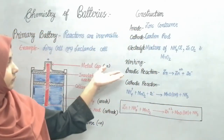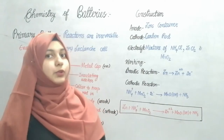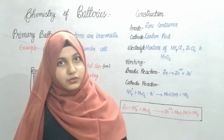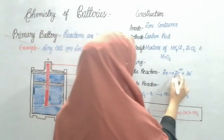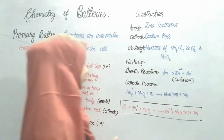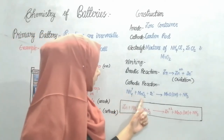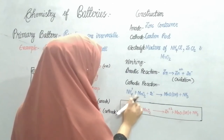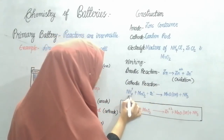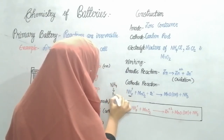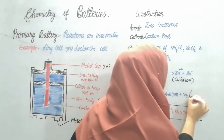Now let's see the working. The zinc container acts as the anode, where oxidation takes place — that is, loss of electrons. Zinc is oxidized to Zn²⁺, releasing electrons. At the cathode side, manganese oxide is reduced from the +4 oxidation state to +3. The reaction is: NH₄⁺ + MnO₂ + 2e⁻ → MnO(OH) + NH₃. Here, ammonium is reduced from +4 to +3 oxidation state, so reduction is taking place at the cathode.